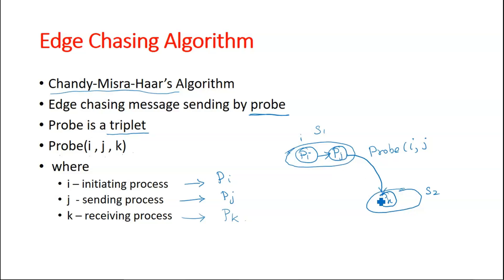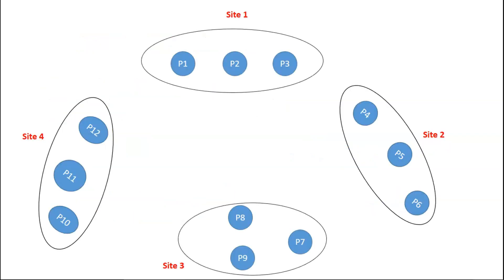And pk is the process receiving the probe at site two. So pjk. So this is how actually individual probe is developed. So now coming to the example.